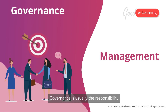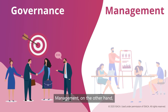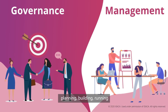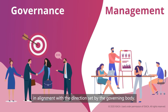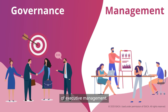Governance is usually the responsibility of the board of directors, though it may be delegated. Management, on the other hand, includes the following activities: planning, building, running, and monitoring activities in alignment with the direction set by the governing body. For most enterprises, management is the responsibility of executive management.